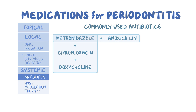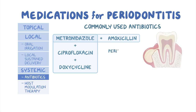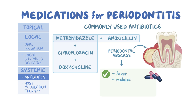On the other hand, individuals with periodontal abscess can be treated with antibiotics if the clinician feels there are signs of systemic involvement like fever, malaise, or lymphadenopathy, or if the pocket is too tortuous to establish adequate drainage mechanically.